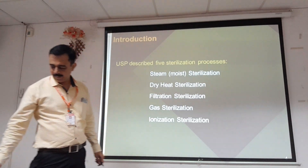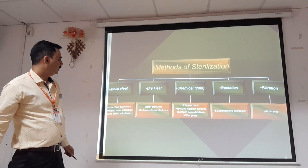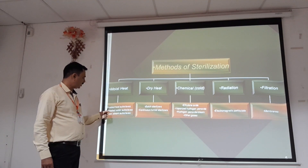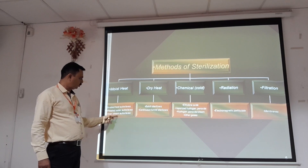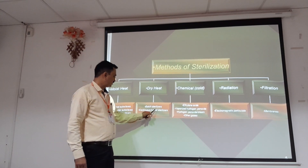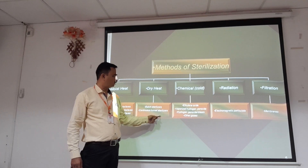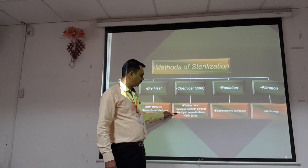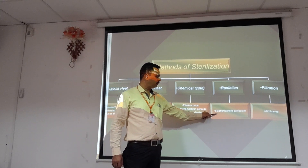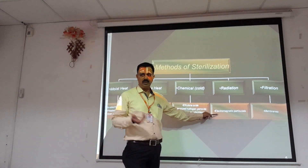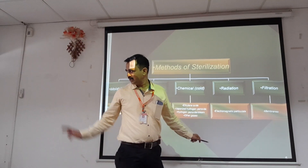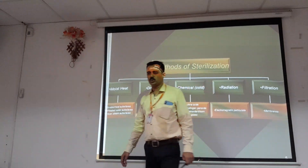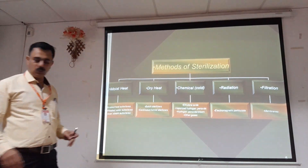The sterilization methods include: moist heat sterilization using saturated steam and autoclaves; dry heat; filtration using continuous tunnel sterilization; chemical coat sterilization using hydrogen peroxide and steam; radiation including electromagnetic and particulate radiation; and filtration using membrane filters. These are the different types of sterilization that can be utilized.